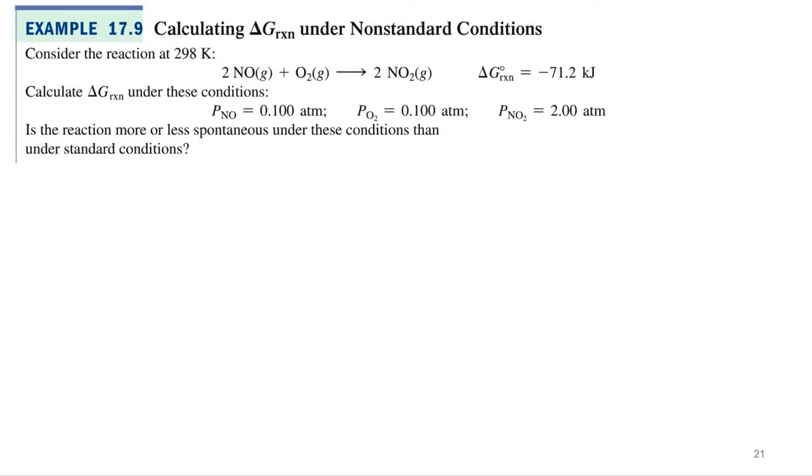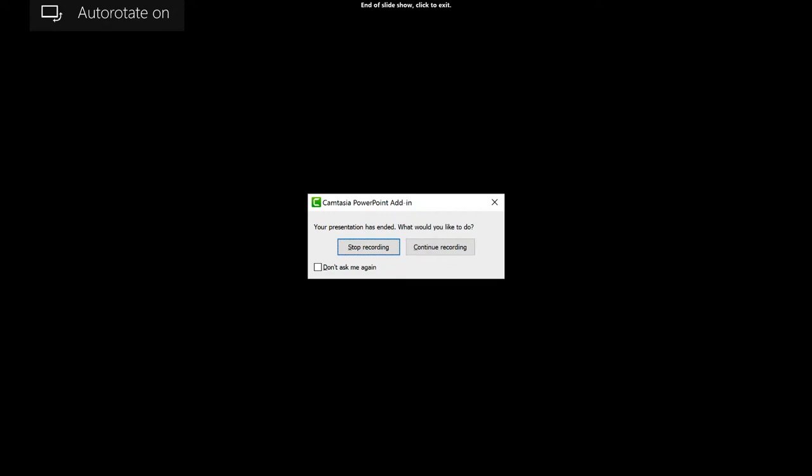Let's try to use that equation on this example. So we're going to calculate delta G under non-standard state conditions for this reaction. Nitrogen monoxide plus oxygen going to NO2. We've got the standard state delta G, negative 71.2 kilojoules. Now we're just going to need to calculate it under non-standard state conditions.